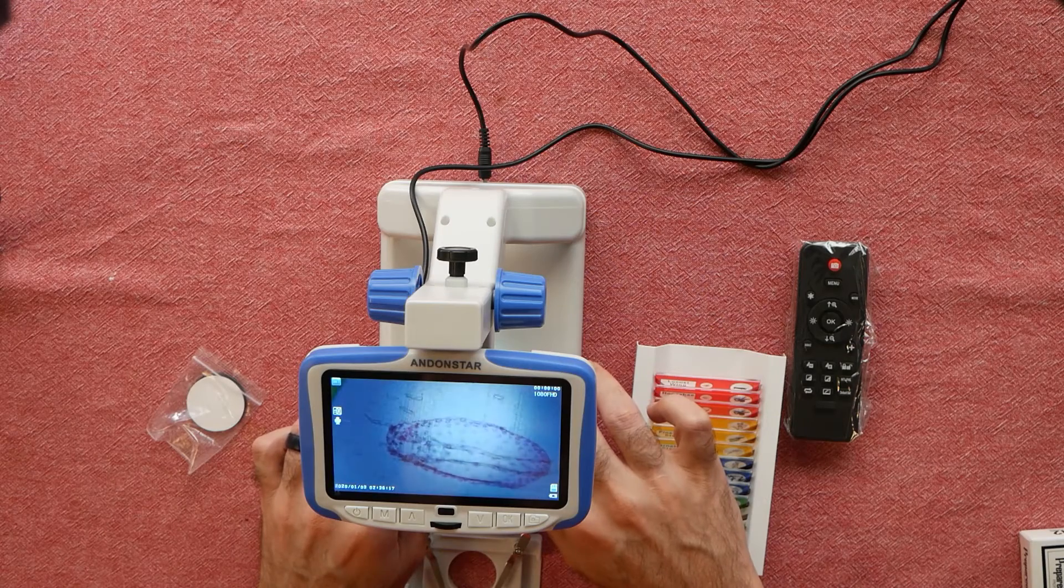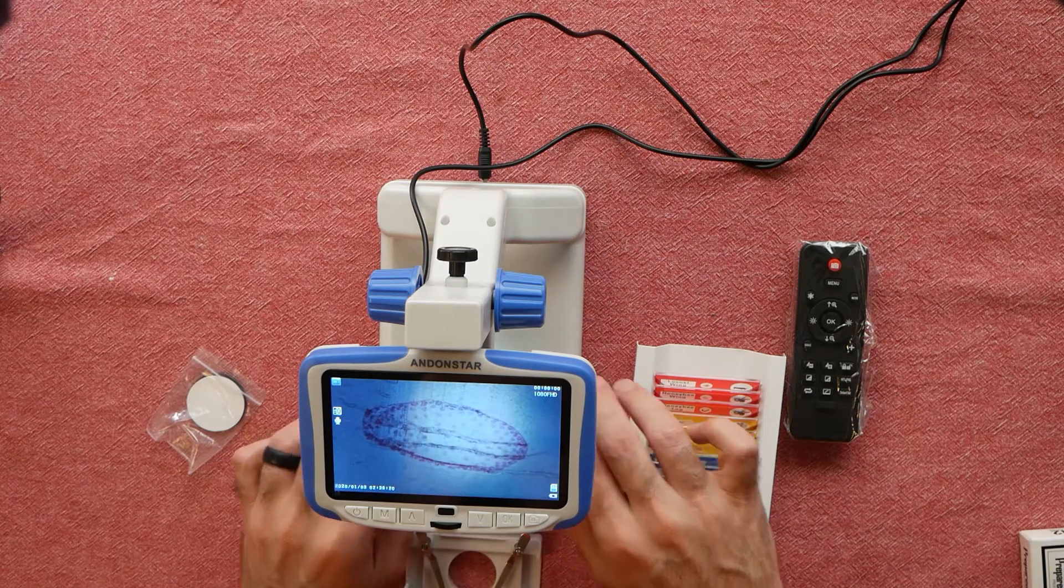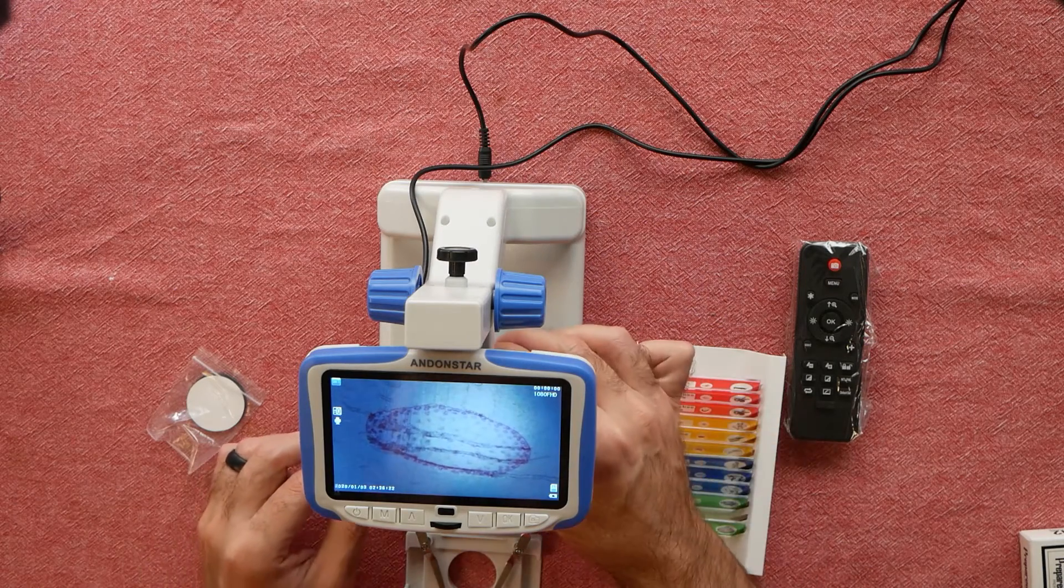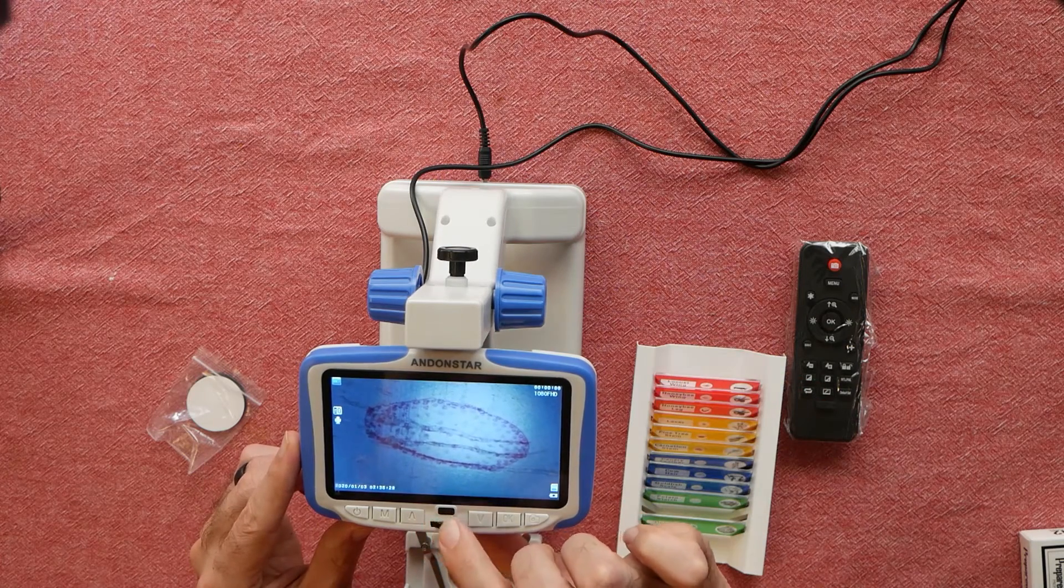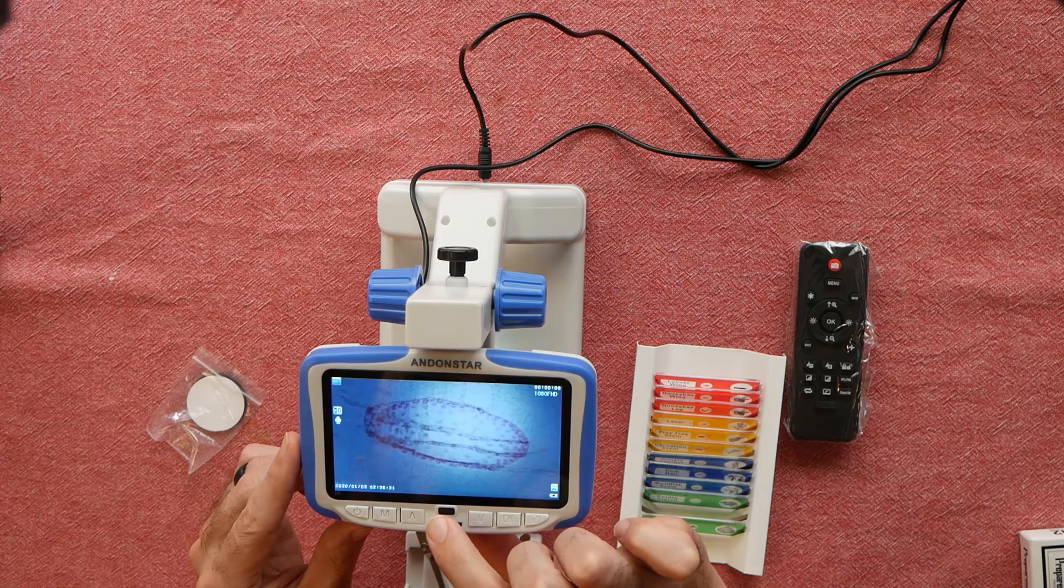Let's try one more photo. This is a corn stem. We can adjust the light with the control knob here in the center, and capture another photo.